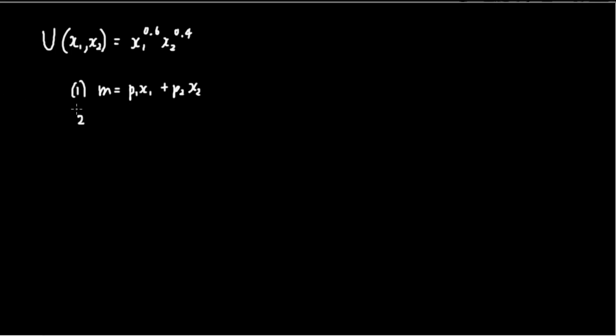The second first order condition is that the slope of the indifference curve is equal to the slope of the budget line, because we are looking for that one tangent point where the indifference curve of the consumer touches the budget line. From what we discussed in the last video, when we manipulate that equation, we get MU1 over p1 is equal to MU2 over p2.